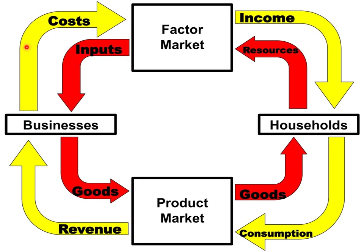The business incurs costs through the factor market because they have to pay for the resources. This becomes income to the household in the form of wages, salaries, rent, interest, and profit.